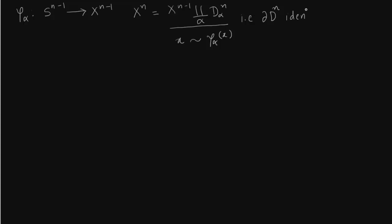So you take the point in the boundary of the disk and attach it to x^(n-1). So in other words, the boundary of the disk is identified with x^(n-1). This is a hand-waving definition. It will be more clear once we see these examples.